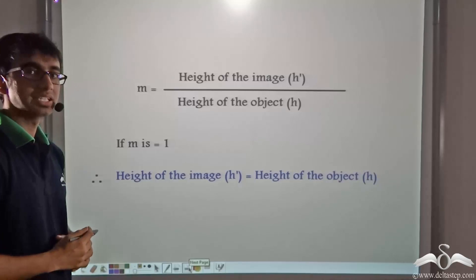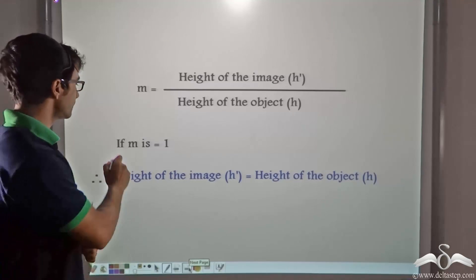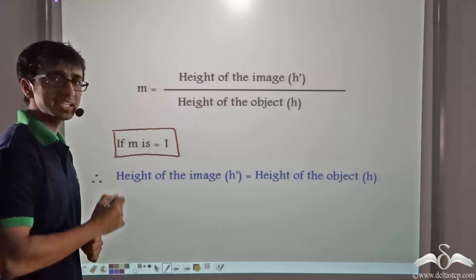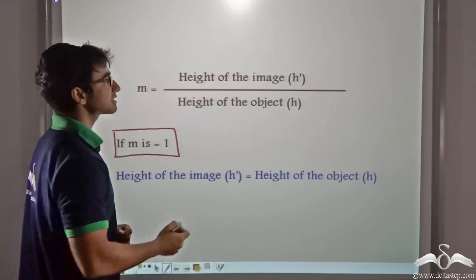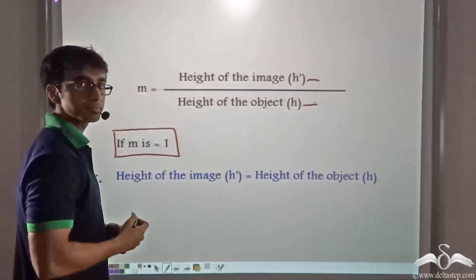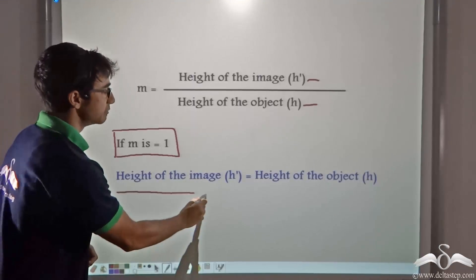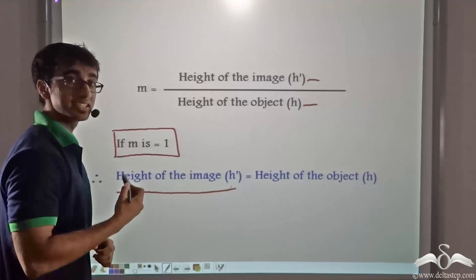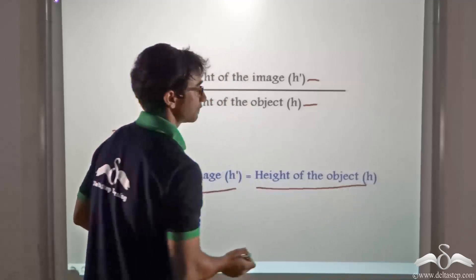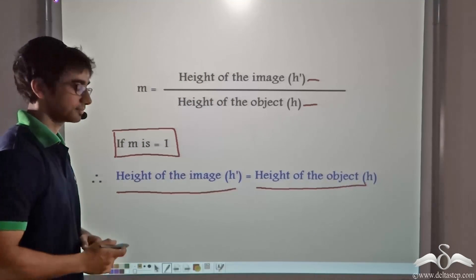And what happens if the value of M is exactly equal to one? It means that the numerator is equal to the denominator, so the height of the image is equal to the height of the object. No magnification is taking place in this case.